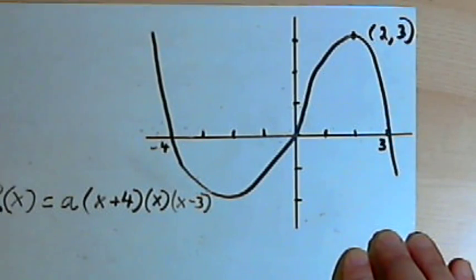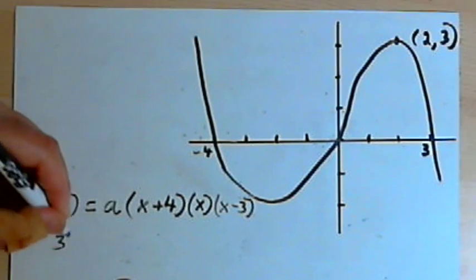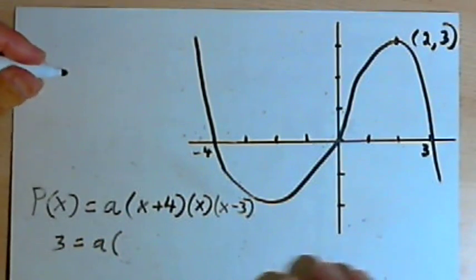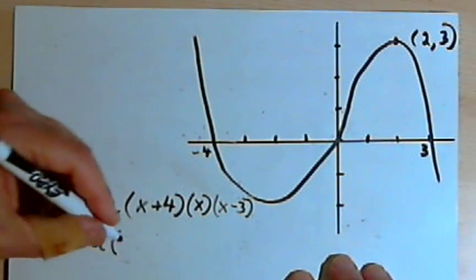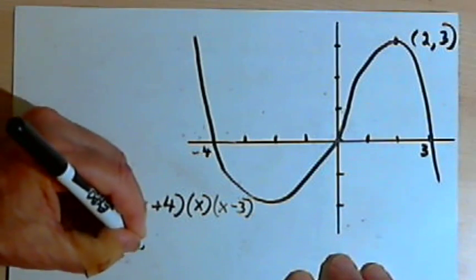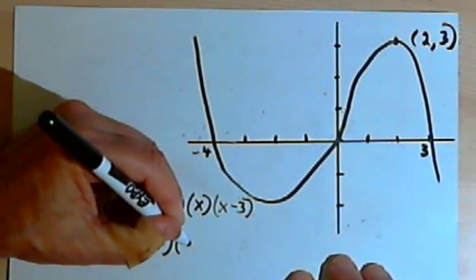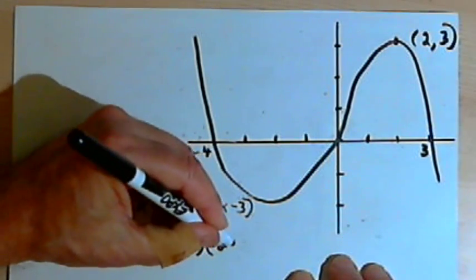I'll take the 3 and put that in where I have p of x. So I'm going to have 3 equals a times... Now I want to take the 2 and put it in everywhere where I have an x. So that's going to be 2 plus 4 times 2 times 2 minus 3.